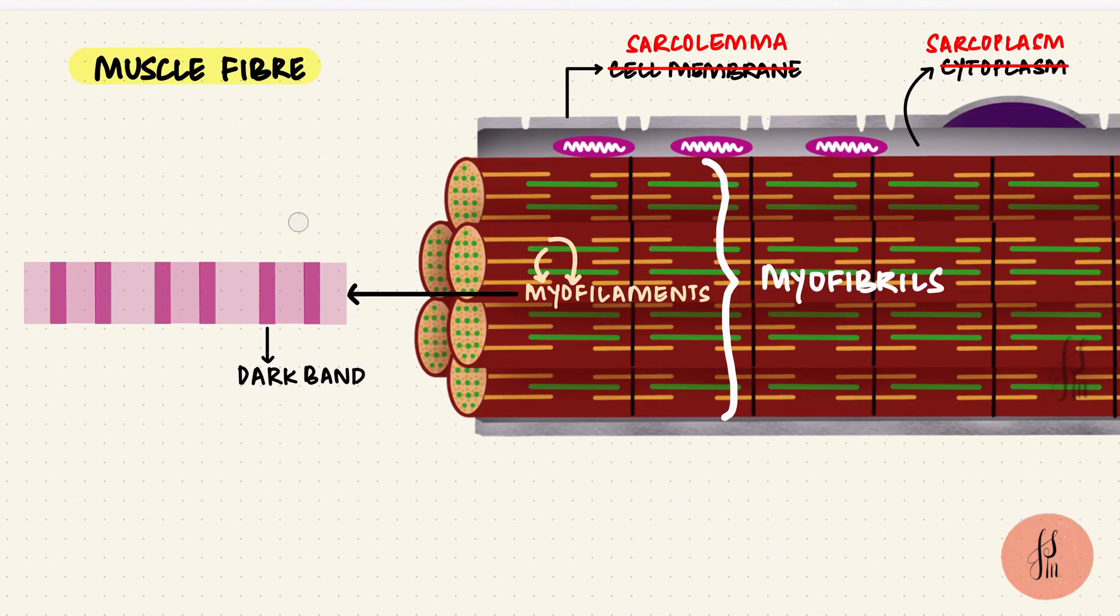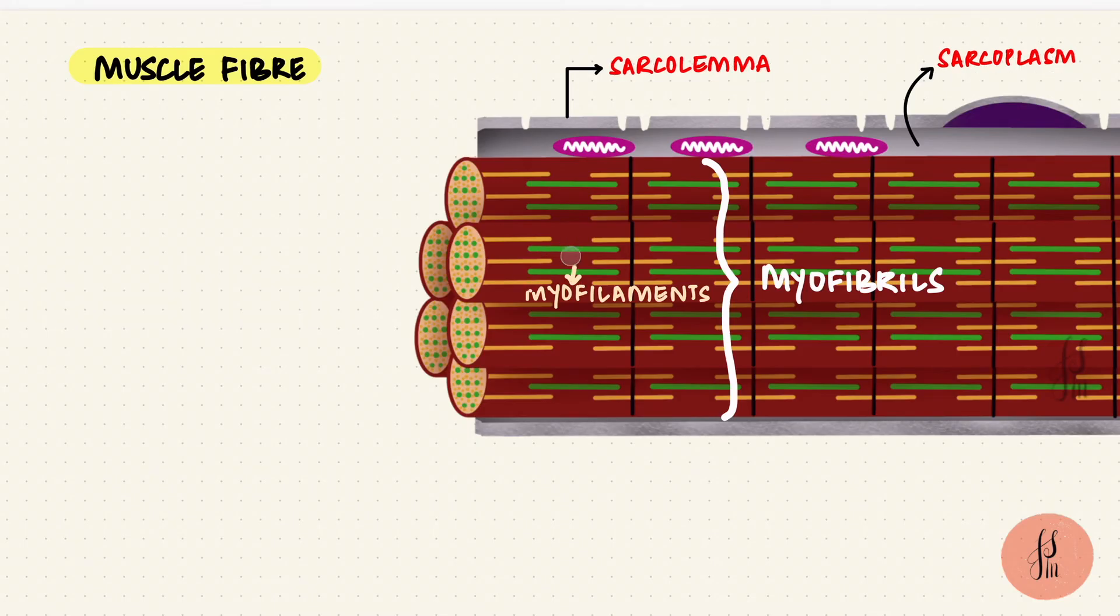Those are the cross striations. So these are the myofilaments, and they were inside myofibrils. And there are quite a few myofibrils arranged inside the muscle fiber, which again remember is the muscle cell.